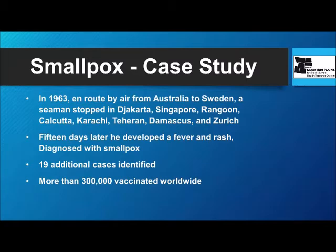Here's one case study. In 1963, there was a sailor en route from Australia to Sweden by air, with multiple stops along the way. Fifteen days into his travels, he developed a fever and a rash and was diagnosed with smallpox. Nine additional cases were identified and more than 300,000 potentially exposed individuals were vaccinated worldwide.